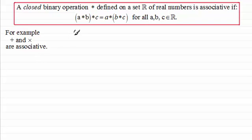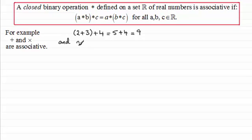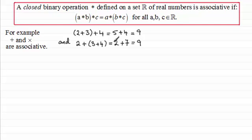Suppose I take 2 plus 3 and then add 4. What we've got here is 2 add 3 which is 5, so 5 add 4 gives us 9. And if I change this to do 2 plus, and then look at 3 plus 4 first, we've got 2 plus 7 which equals 9. So here we have an example showing that addition is associative for real numbers.